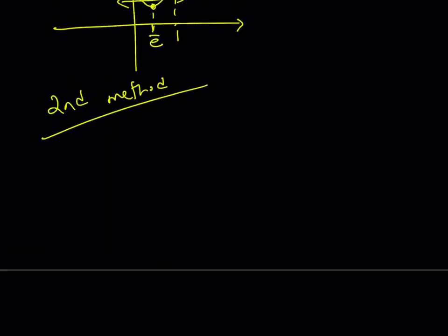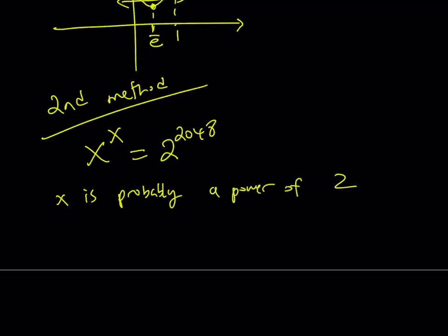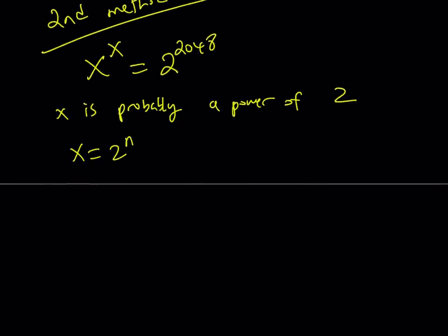The second method involves a different approach, slightly different approach. Since x to the power of x is a power of 2, we're just assuming x is probably, and it's actually certain, a power of 2. Therefore, we can write it as x equals 2 to the power of n. Isn't that awesome? Let's see how that's going to help us. Replace x with 2 to the power of n everywhere, and then set it equal to this. So we're going to try to solve for n, but notice that n is an integer here, and we want it to be actually a positive integer. You already know the answer, but let's just pretend we don't. n is a positive integer, and we're going to try to solve for n here, as opposed to solving for x directly.